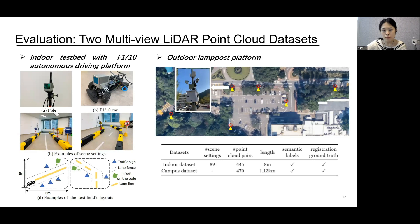This table shows the summary of the two datasets. For the indoor dataset, we set up 89 simulated traffic scenarios and collected 445 vehicle infrastructure point cloud pairs. For the campus dataset, we collected 470 point cloud pairs, covering three roads with a total length of 1.12 kilometers.